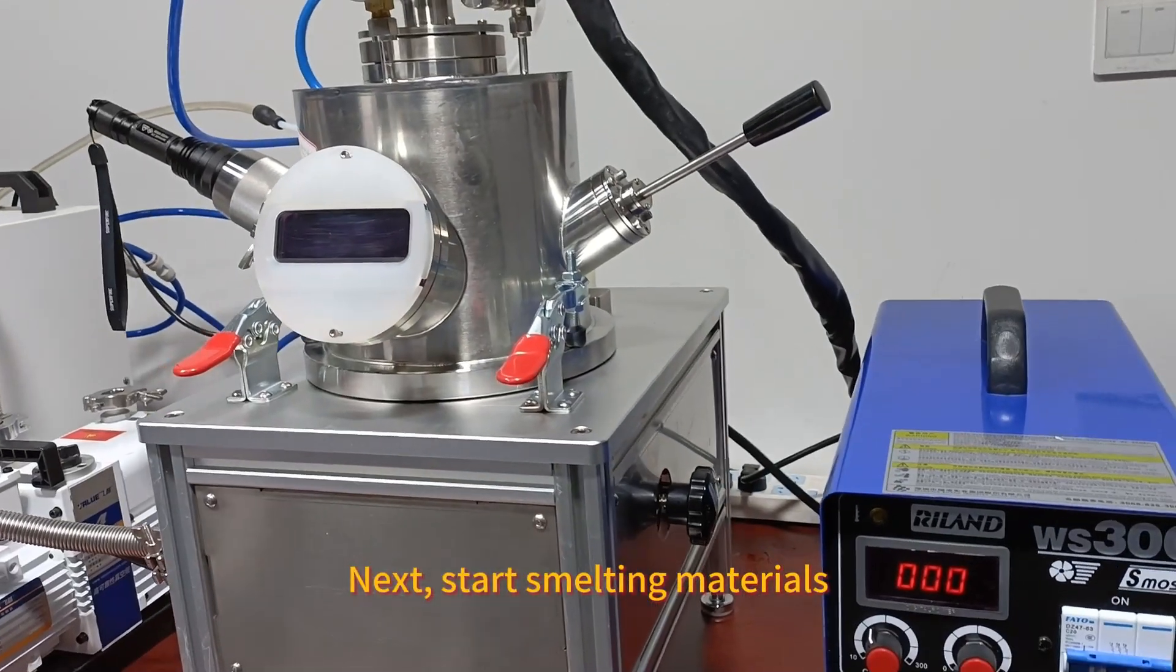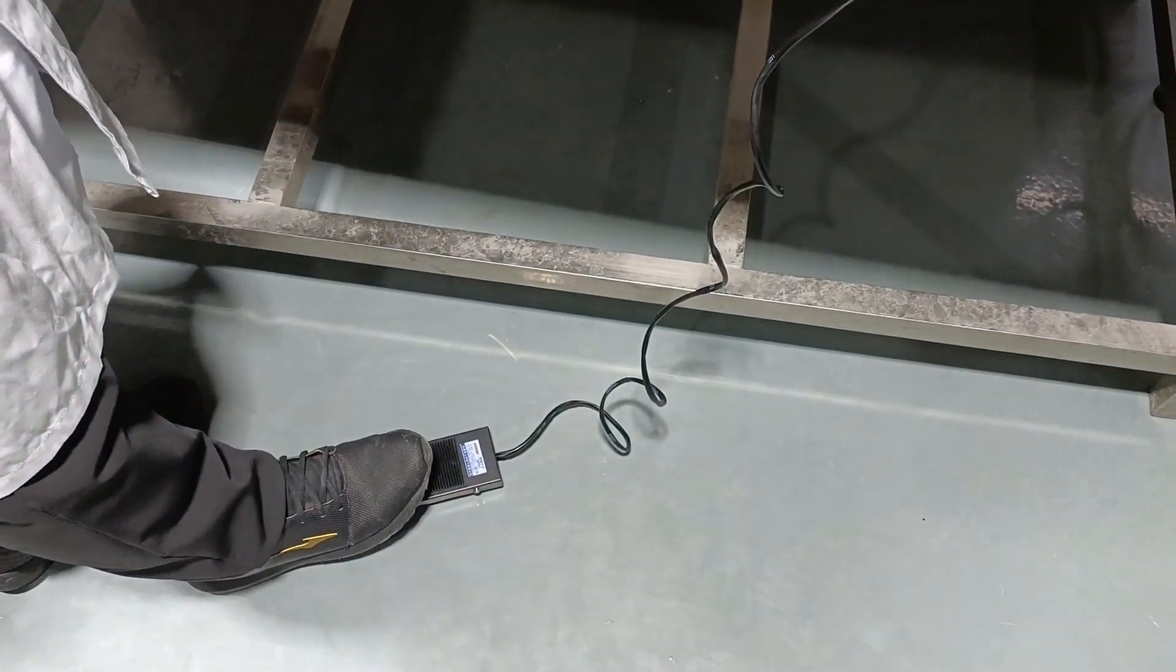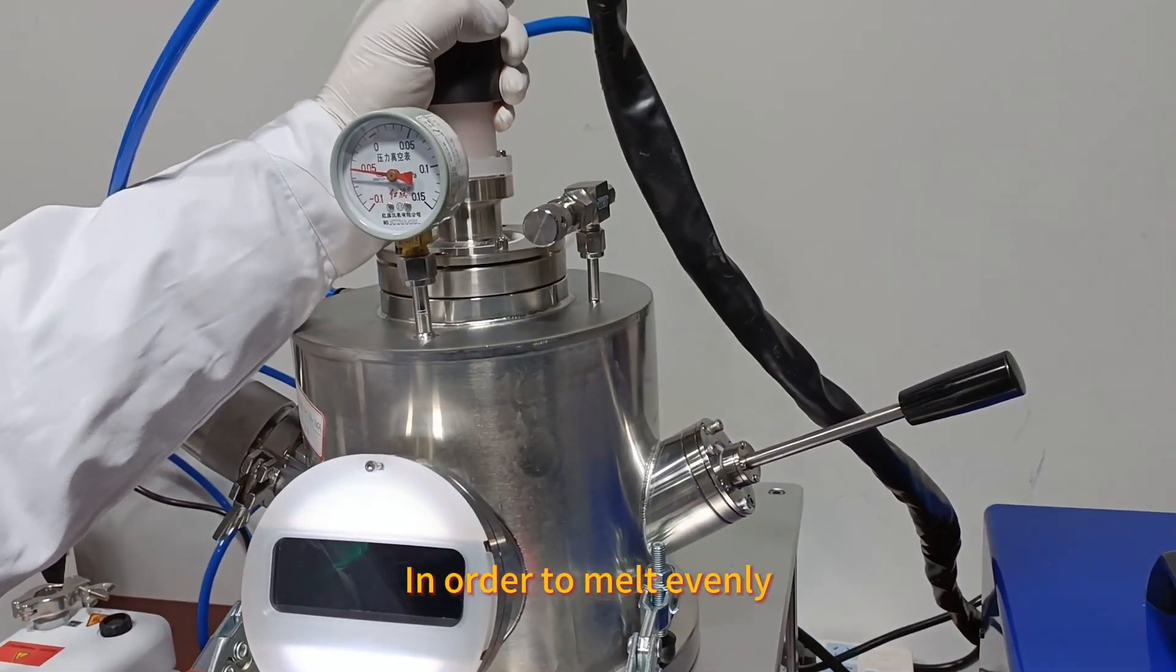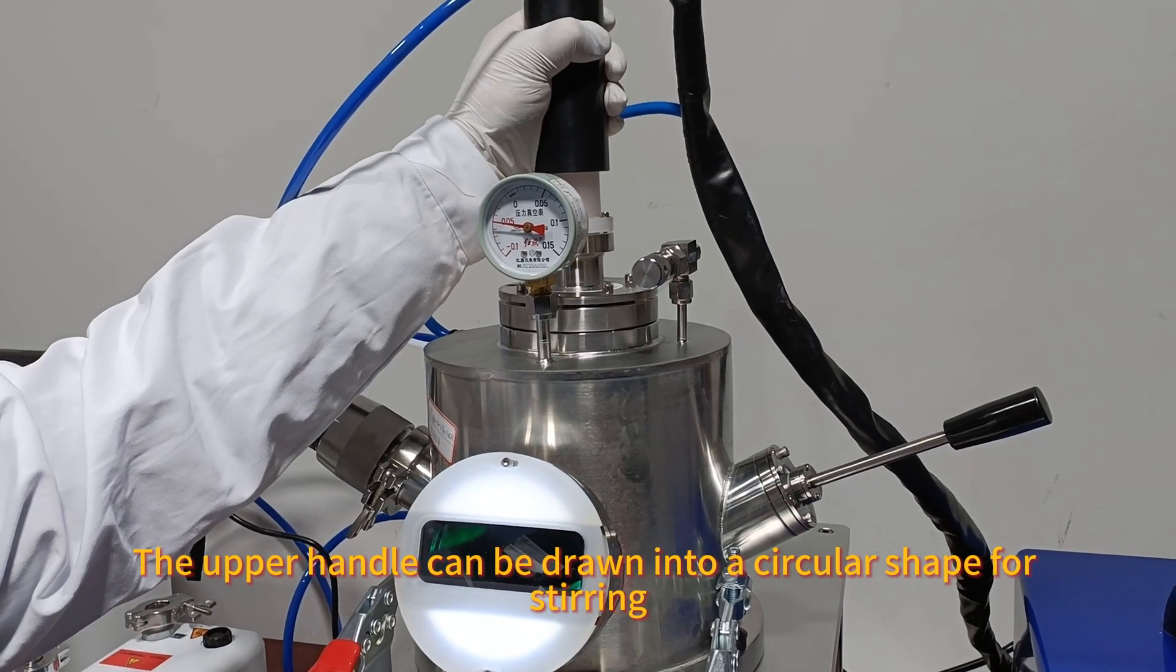Next, start smelting materials. Step on the paddle. In order to melt evenly, the upper handle can be drawn into a circular shape for stirring.